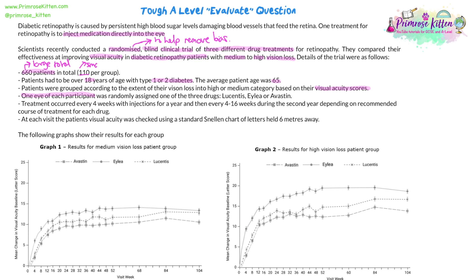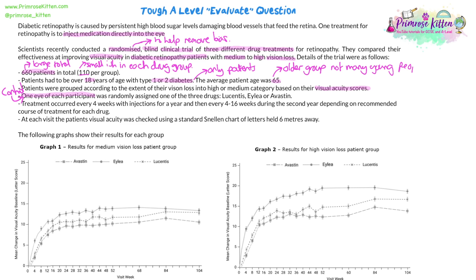666 patients seems like a lot, but 110 per group is quite smallish — I said under 100 would be a small group, and 110 is close to not being particularly large for each drug type. Patients have to be over 18, but with type 1 or 2 diabetes only, and the average age was 65, which makes sense for diabetes but does narrow down who we're looking at — quite an older group, not testing everyone from 18 up to 80. Visual acuity scores are an objective measurement — they can't lie about whether they can see the letters. One eye of each participant was given a drug, meaning the other eye is technically a control. And it's clearly a long-term study running from one year into two years.